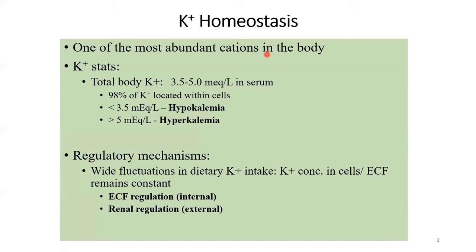Potassium is concentrated inside the cell — most of it is in the intracellular compartment, with very little in the ECF. In the ECF, normal potassium is 3.5 to 5 mEq per liter, and 98% of potassium is within the cells. Hypokalemia is decreased ECF potassium — less than 3.5 mEq per liter — and hyperkalemia is increased ECF potassium, more than 5 mEq per liter.